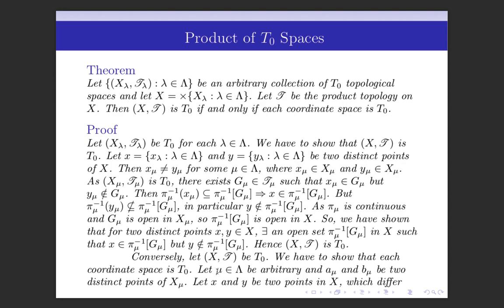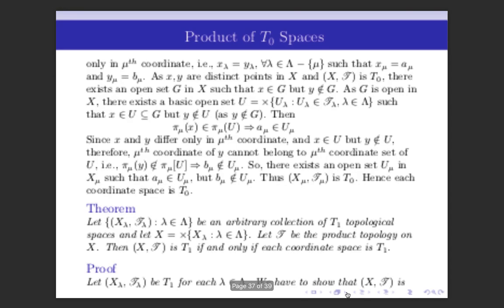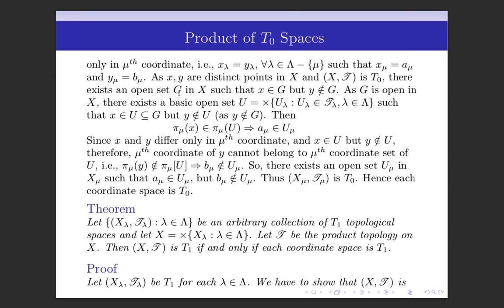Conversely, let (X,T) be T0; then we have to show that each coordinate space is T0. Let μ∈Λ be arbitrary, and we shall show that (Xμ, Tμ) is T0. Consider two distinct points aμ and bμ of Xμ. Let x and y be two points in X which differ only in the μth coordinate, that is, xλ = yλ for all λ ≠ μ, and the μth coordinate of x is xμ = aμ.